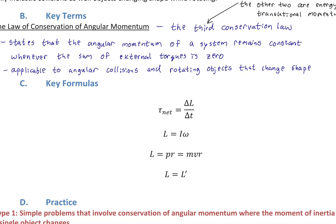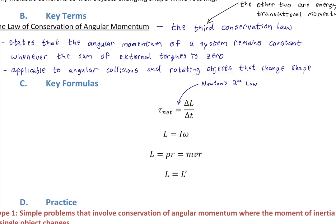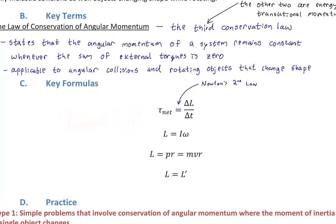This is Newton's second law in the angular momentum form — the fourth and final time we'll see Newton's second law. We just saw it as tau_net = I*alpha. Now this is Newton's second law in angular momentum form.